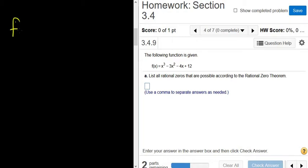So a function f of x equals x cubed minus 3x squared minus 4x plus 12. And we're being asked to find the possible rational zeros.